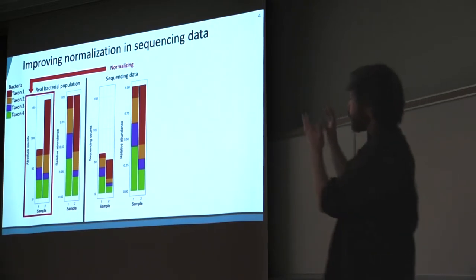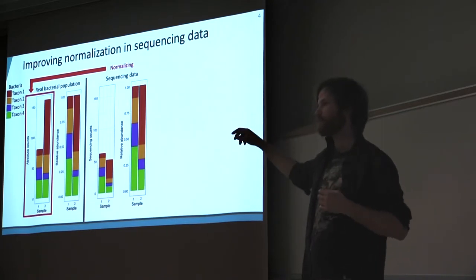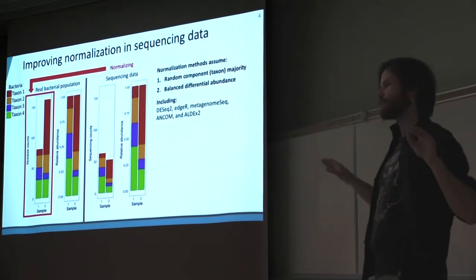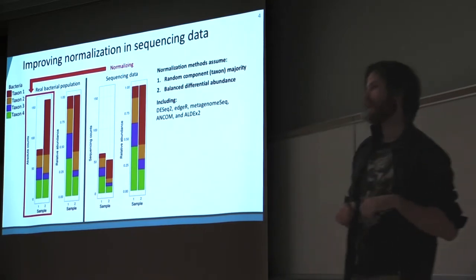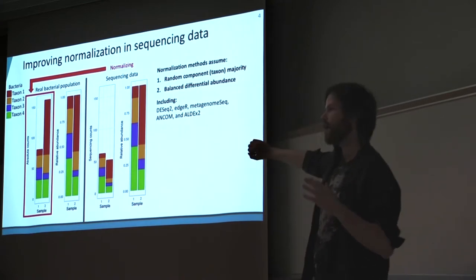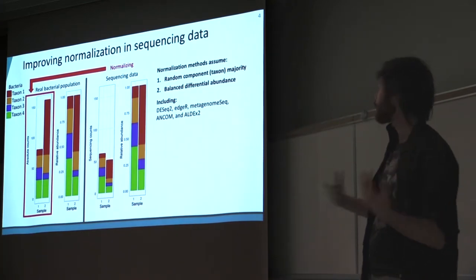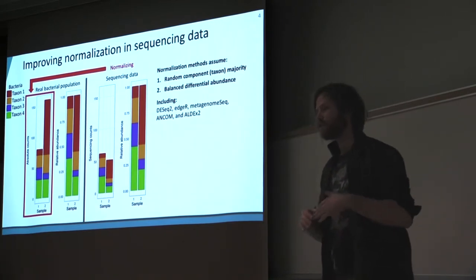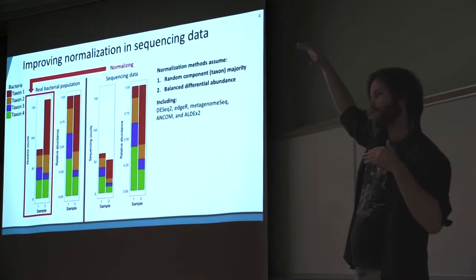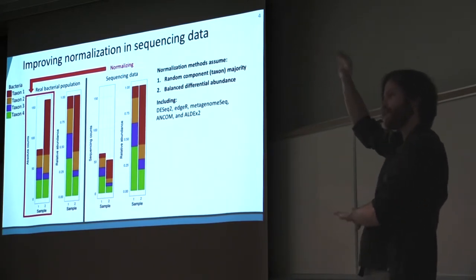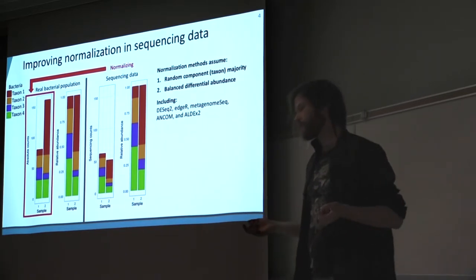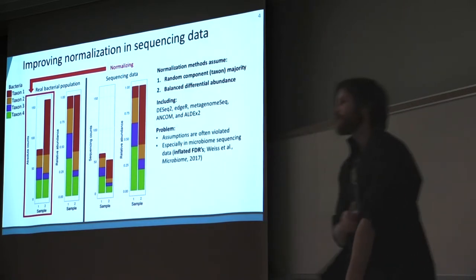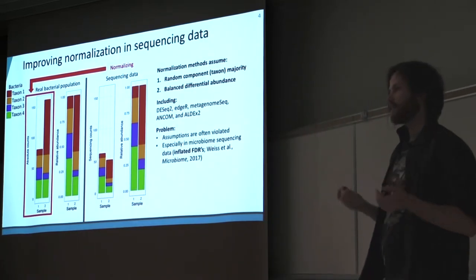Normalization is going from the sequencing data to some approximation of the absolute counts in the original samples. All current normalization methods have two statistical assumptions. One is that most of your components — which are the bacterial taxa or genes you've sequenced — are random across your samples. The other is a balanced differential abundance assumption: if a bunch of bacterial taxa go up in one set of samples, there has to be an equal amount of taxa whose abundances go down. Methods with these assumptions include DESeq2, EdgeR, ANCOM, and ATALX2.